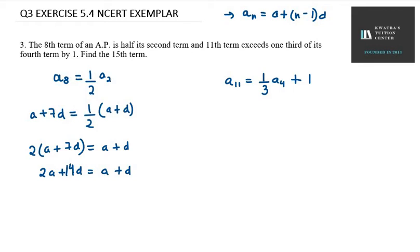It will be 2A plus 14D equals A plus D. Bring A to the left-hand side and D to the left-hand side, so it will be 2A minus A, which is A, and 14D minus D is 13D equals 0. This is equation number 1.